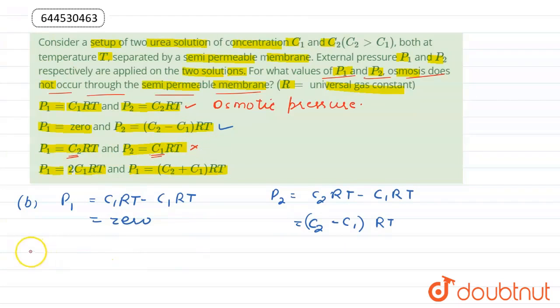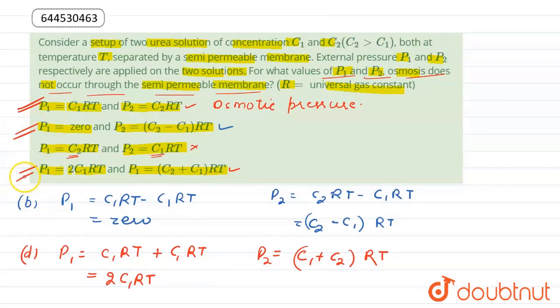In the last option D, there is addition of C1RT to both pressures. On adding C1RT to P1, we get 2C1RT, and to P2 we get (C1 + C2)RT. So the last option is also correct. Therefore, in the first option, second option, and the last option, there is no osmosis through the semi-permeable membrane.